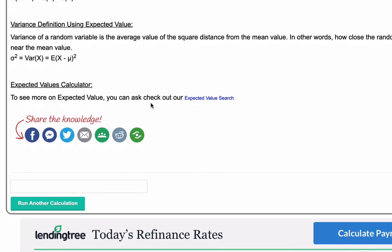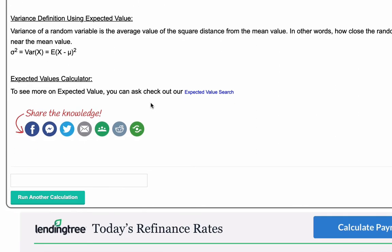Moving on, we've got the variance definition using expected value. The variance of a random variable is the average value of the square distance from the mean value. In other words, how close is this random variable distributed near the mean value? We have σ² which is also Var(X) equals the expected value of (X minus μ)². The quantity X minus μ squared is what we're taking the expected value of, and that gives you the variance.